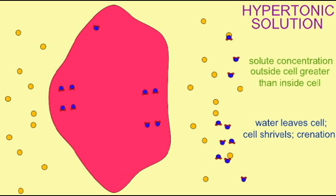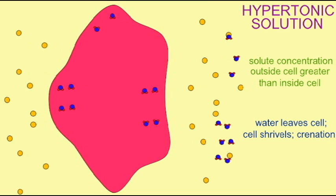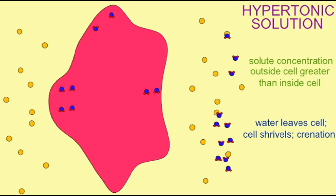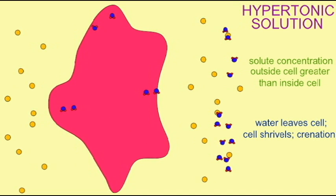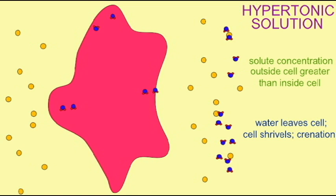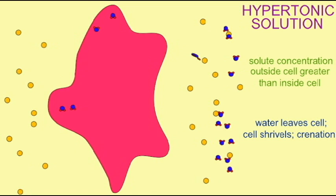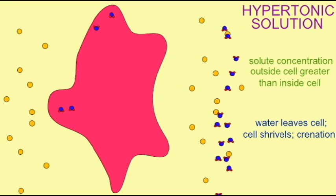This can actually be observed because as water leaves the cell, the cell will shrivel, a process known as crenation. And so therefore, in a hypertonic solution, cells will shrivel or undergo crenation as water leaves the cell.